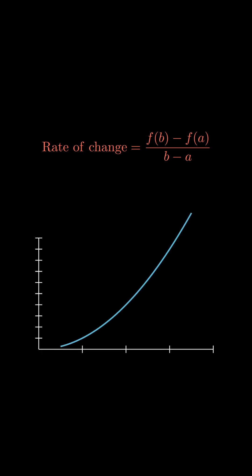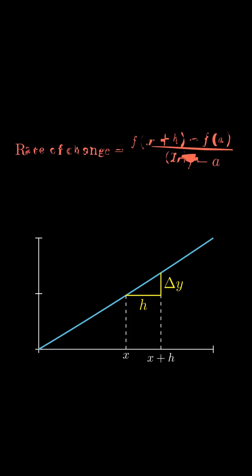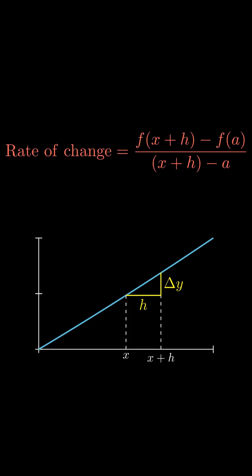Well, let's start by looking at the rate of change formula and zooming in on this graph of y equals x squared. Now, if we look at two points, x and x plus h, where h is a very small increment, we can approximate the tangent line by using these two points, replacing b with x plus h and a with simply x.